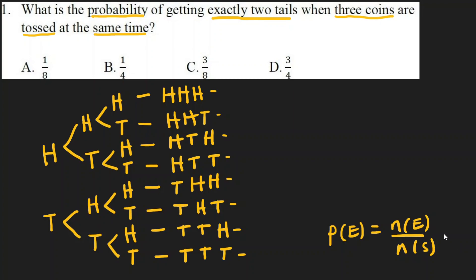The total number of possible outcomes is equal to eight. Now we need to find the number of favorable outcomes for exactly two tails.